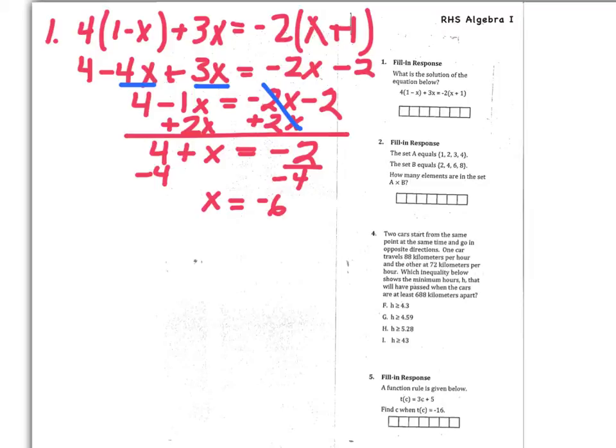And so that is what you are going to put into your gridded response box. Now remember with a gridded response that you can either left justify or right justify, but it's going to take one box for the negative and one box for the digit 6.